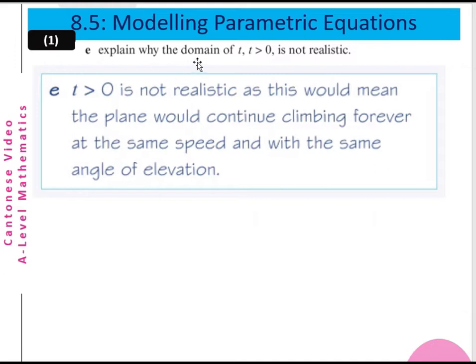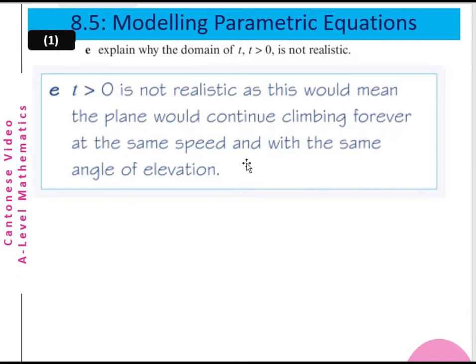Part e: Explain why the domain of t (t > 0) is not realistic. If t greater than 0 with no upper bound, this would mean the pen continues climbing forever at the same speed and the same angle of elevation — which is not realistic.